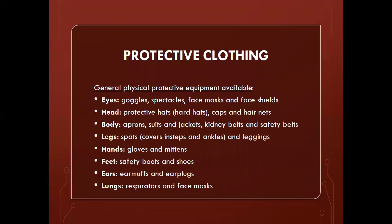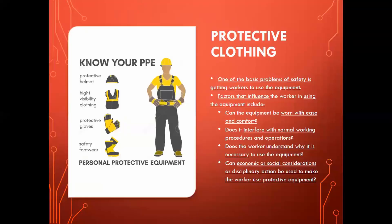There is various protective clothing for workers and contractors. The general categories are split into eyes, head, body, legs, hands, feet, ears, and lungs. You can read up more on all of these if you don't know all of them or why some exist — for example, something like an apron, a kidney belt, or mittens. Why do you need gloves? Why do you need mittens?